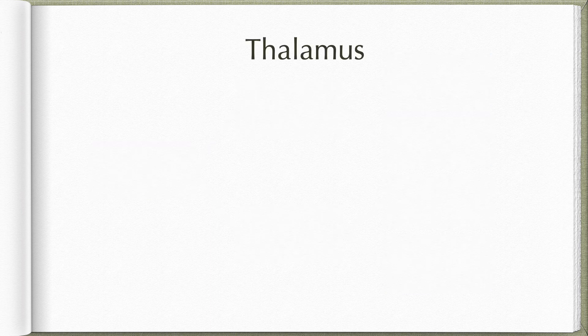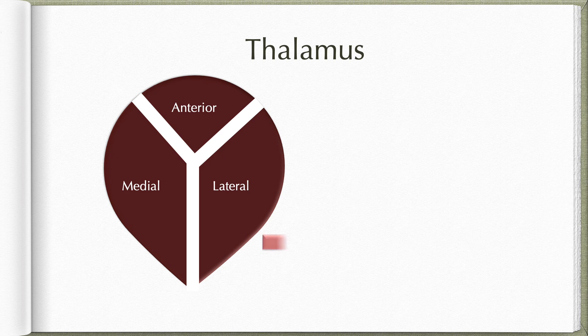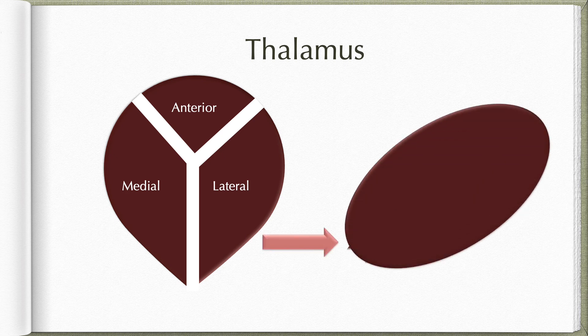The thalamus forms the largest part of the diencephalon and acts as a gateway for all cortical inputs except for the olfactory pathway. It serves as a sensory relay center and also influences motor and emotional responses. It is an oval-shaped structure divided by a Y-shaped internal medullary lamina into three nuclear groups: anterior, median, and lateral.